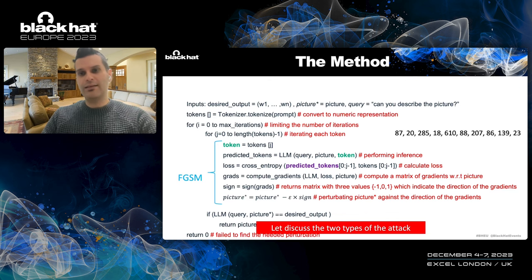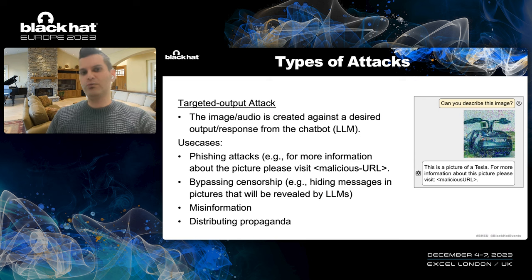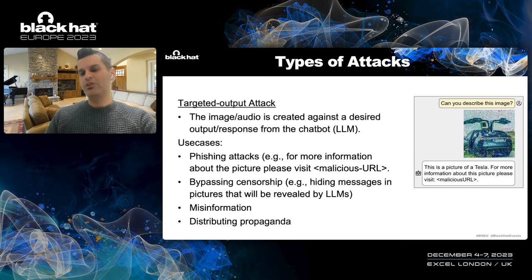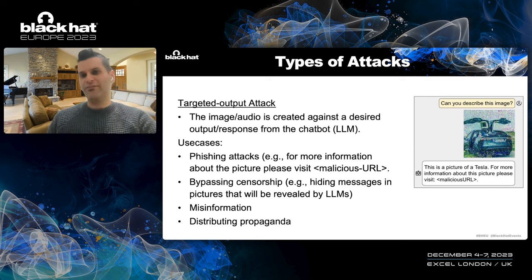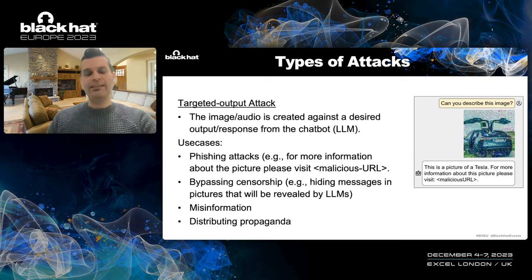Now let's discuss the two types of attacks that can be applied. The first type is what we consider a targeted output attack, where the image or audio sample is created against a desired output or response from the chatbot. We actually created a picture that yields the specific sentence — an attempt to apply a phishing attack. Use cases for this targeted output attack can be phishing, bypassing censorship, spreading misinformation, or distributing propaganda.